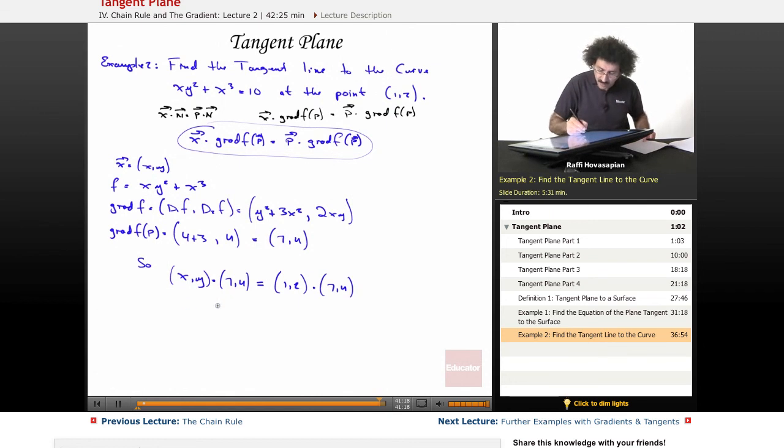This is 7x + 4y. 1 times 7 is 7. 2 times 4 is 8. And if I'm not mistaken, we get 7x + 4y = 15. There you go.